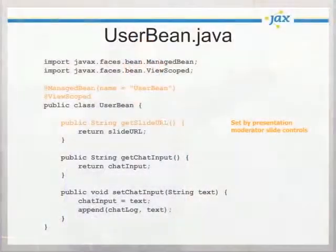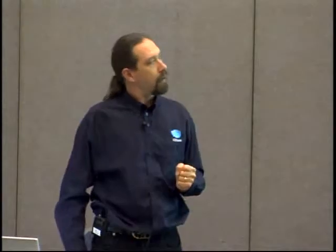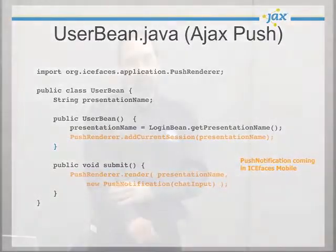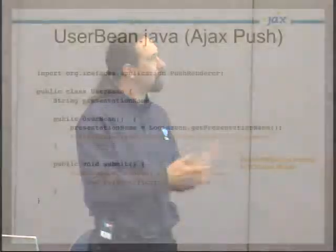We can say that this is a managed bean. We don't need to give its name because it can be picked up from the class name. This particular bean is view-scoped, which means the bean is stored with the component tree. We'll talk about view scope a little bit later. It's a nice scope, but it's not the silver bullet I was hoping it would be.